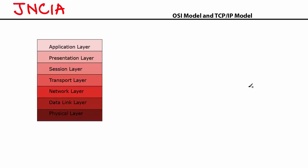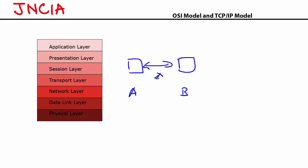Before we begin understanding what the OSI model is, it is important to understand why we have something called the OSI model. We need to go back in time into the 1960s and 1970s when device manufacturers started producing network devices. Each device manufacturer had their own standards and protocols, which means if you purchased two network devices from two different vendors and tried to make them talk, this wouldn't happen because there was no common standard or protocol. That's when the International Standards Organization, also known as the ISO, came forward to standardize network communication and introduced what is known as the OSI model.